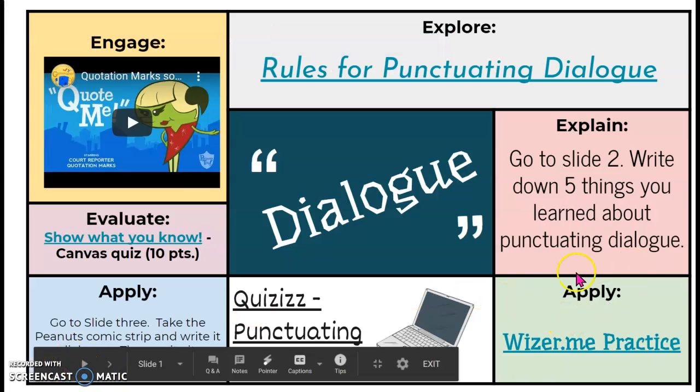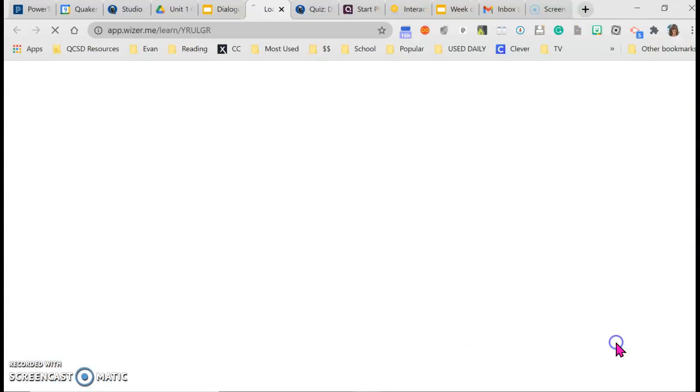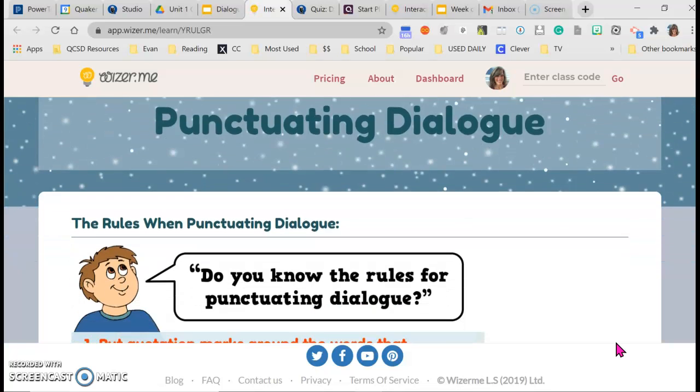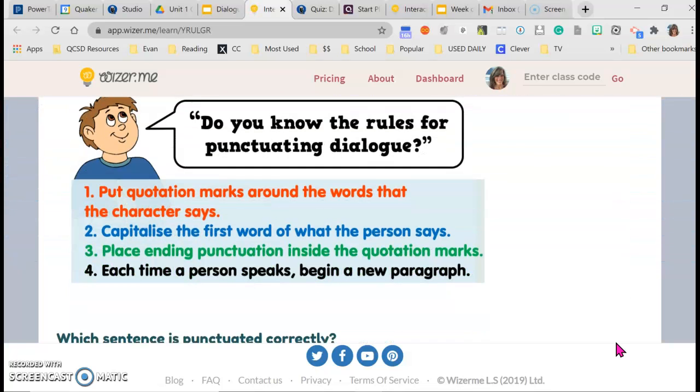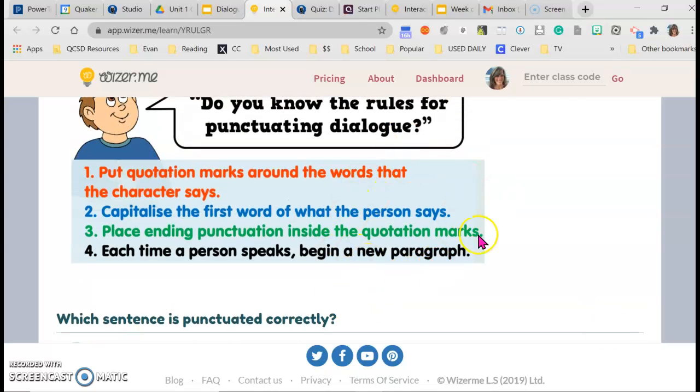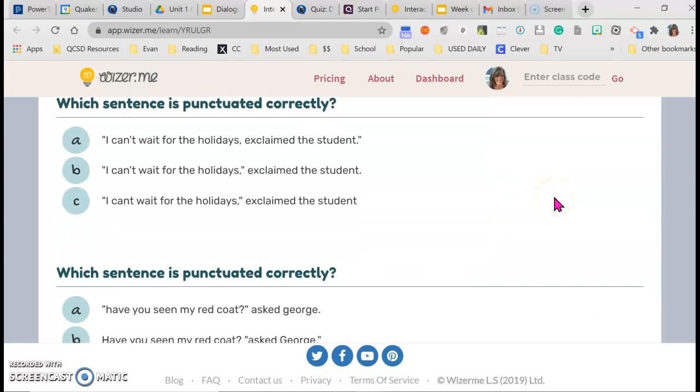And then you're going to do your apply step. You're going to go to your wiser.me, log in with Google, and you're going to determine which sentence is punctuated correctly. There's a review of some of the rules in case you forget them.